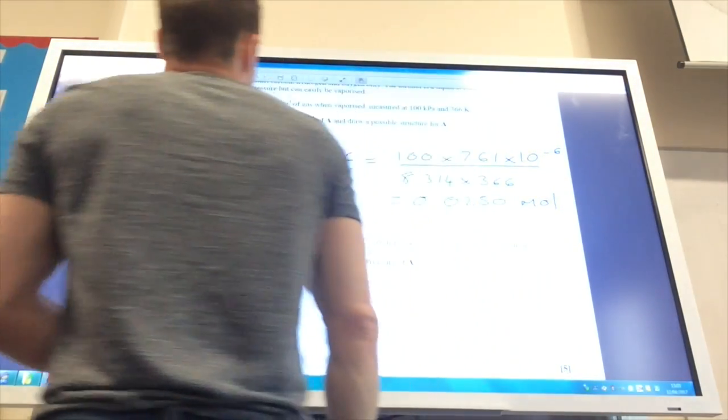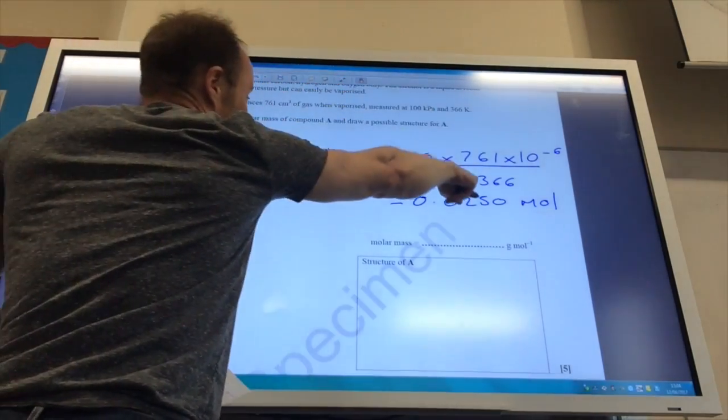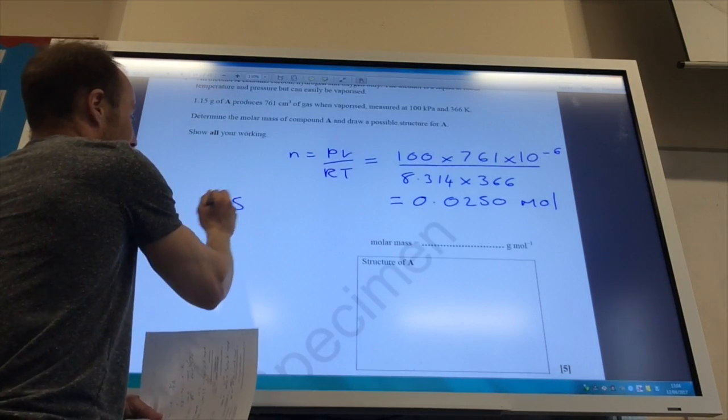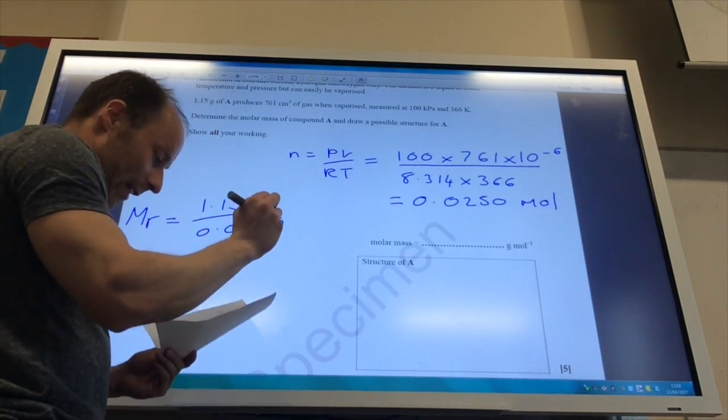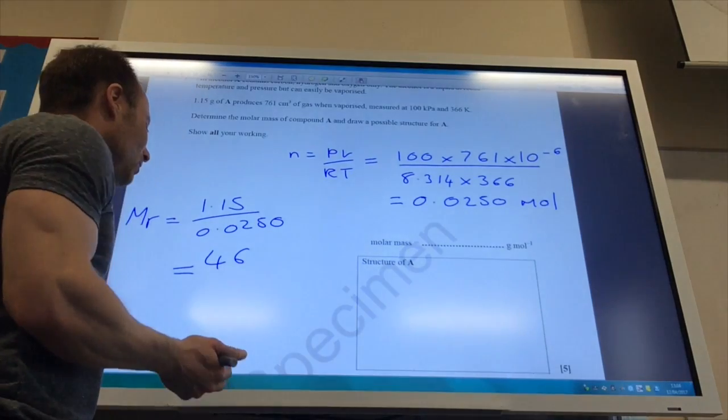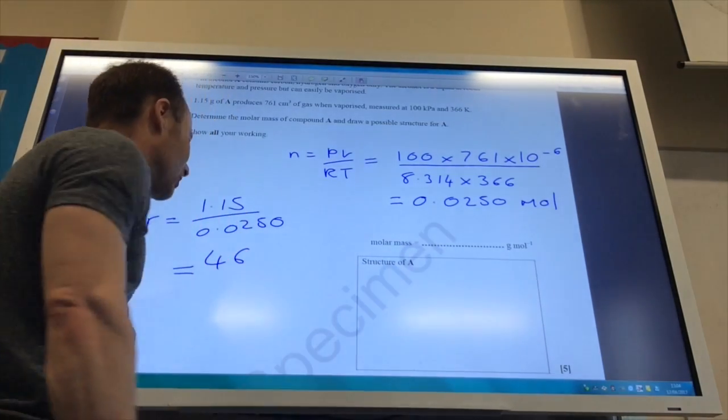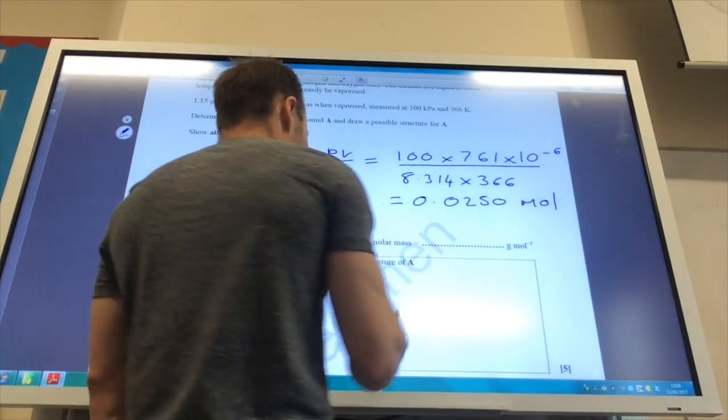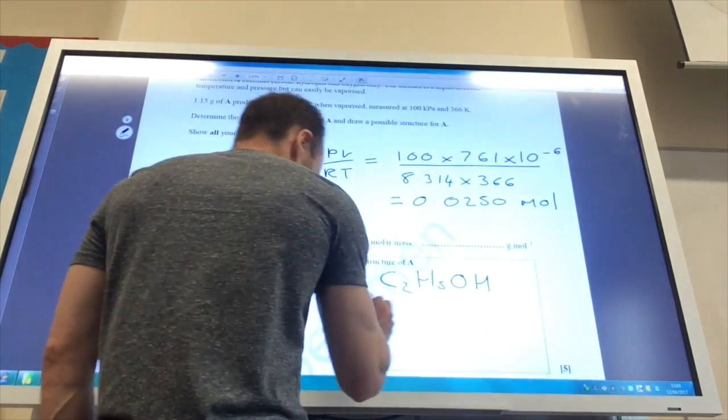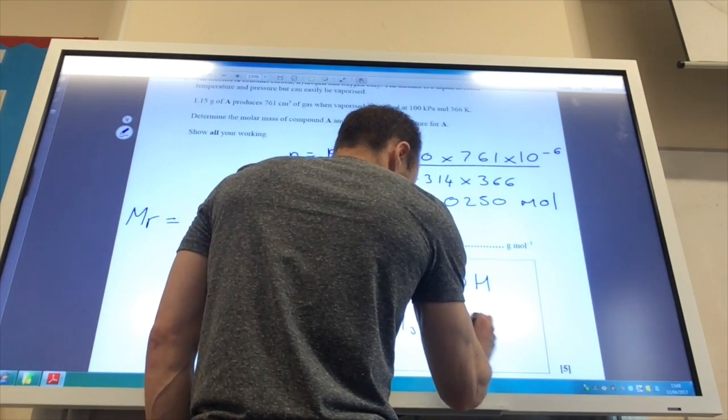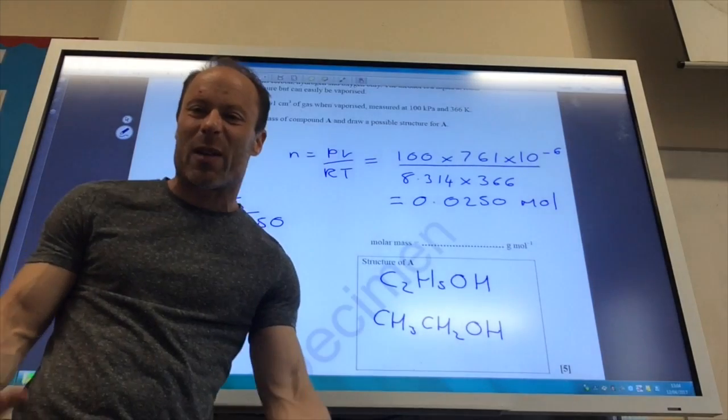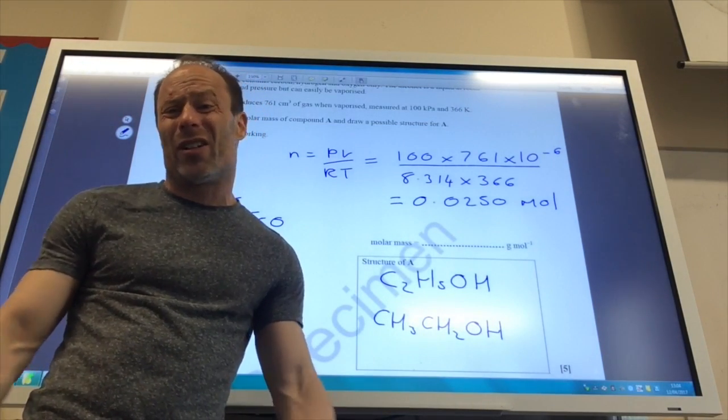That mass produced that volume, so that number of moles must come from that mass. So the MR is the mass divided by the moles, which gives me 46. So what can it be? It's got carbon, hydrogen, and oxygen in it. Well, oxygen is 16, so that gives me, take away 16 is down to 30. Couple of carbons is 24. So C2H5OH. And the structure is ethanol. If you don't get that bit, it's a bit playing around with your numbers on a calculator. Take away oxygen, take away a couple of carbons, and then if you're down to about 5 or 6, you know the rest is just going to be hydrogen.